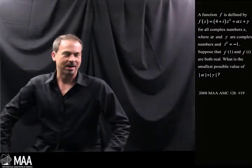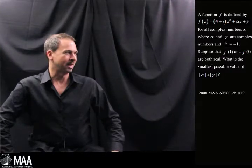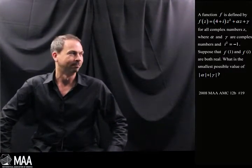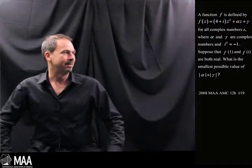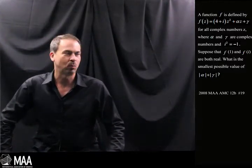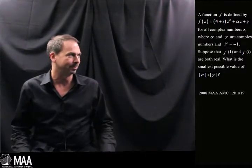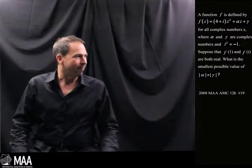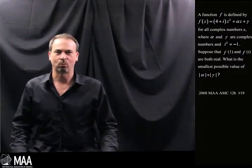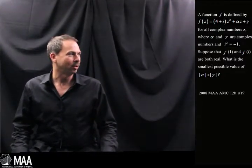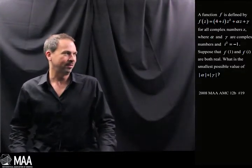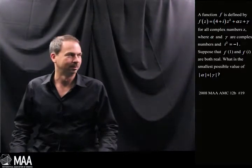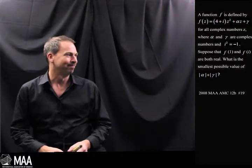A function f is defined by f(z) = (4+i)z² + αz + γ for all complex values z, where α and γ are complex numbers and i² = -1. At least i is being used the way I expect. Suppose that f(1) and f(i) are both real. What is the smallest possible value of |α| + |γ|? Oh, heavens. That is just scary.